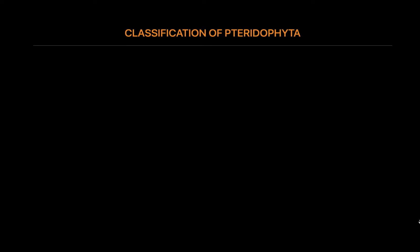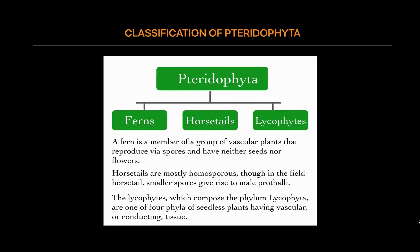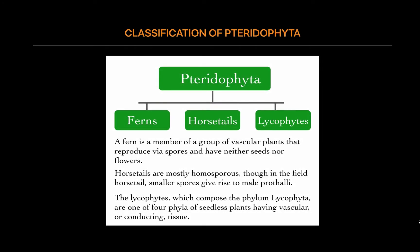Classification of Pteridophyta: the three different types of pteridophytes are ferns, horsetails, and lycophytes. A fern is a member of a group of vascular plants that reproduce via spores and have neither seeds nor flowers. They differ from mosses by being vascular — having specialized tissues that conduct water and nutrients — and in having life cycles in which the sporophyte is the dominant phase.